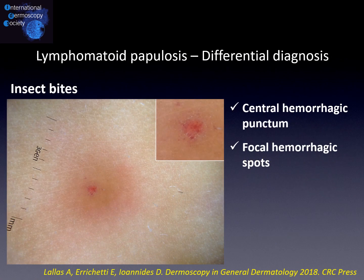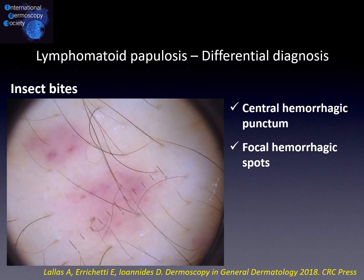A couple of words about the main differential diagnosis of lymphomatoid papulosis. Insect bites may be distinguished from lymphomatoid papulosis by highlighting the central hemorrhagic punctum. Additionally, in this condition we may also see hemorrhagic spots, which differently from lymphomatoid papulosis are typically distributed in a focal way.